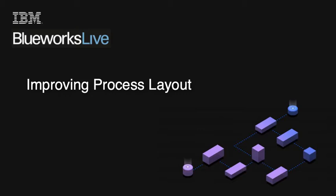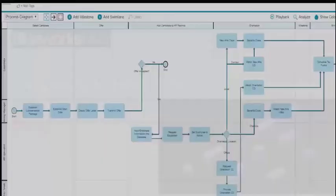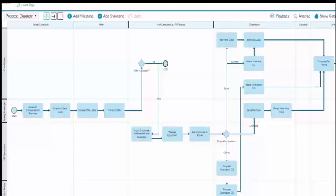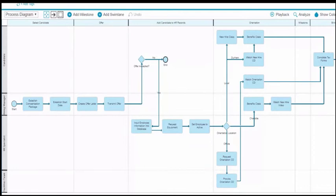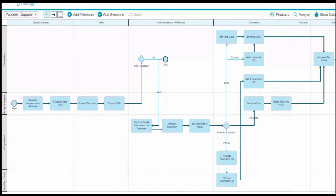This video shows you how to use the different layout features of BlueWorks Live to arrange the elements in your process diagram. As you add elements to your process diagram, BlueWorks Live automatically lays out the diagram for you. By default, new elements are inserted to the right of the previous element in the same swim lane.